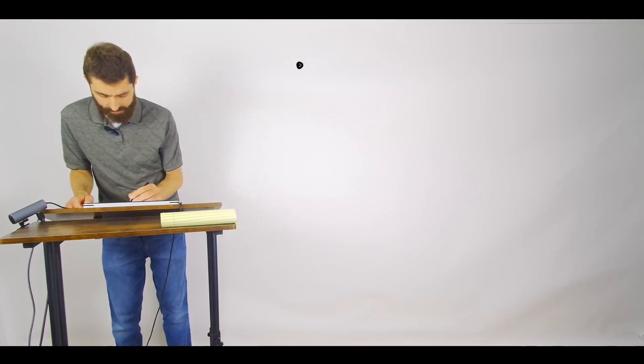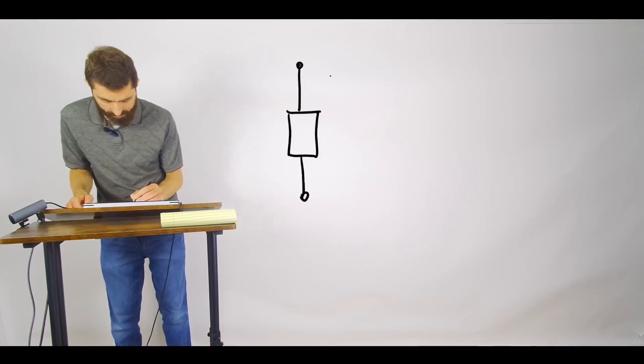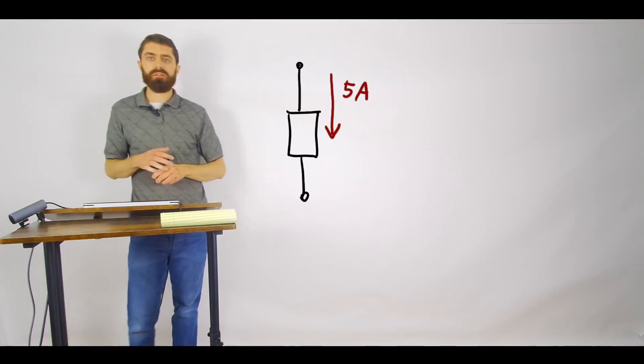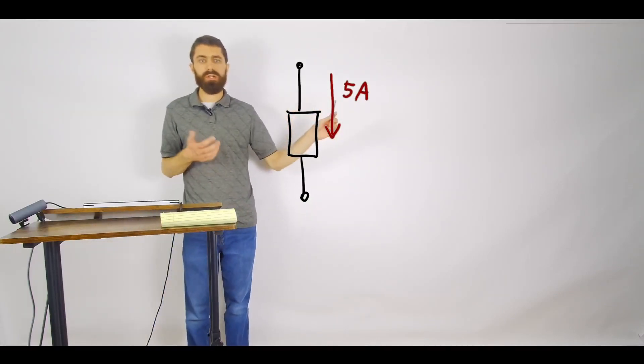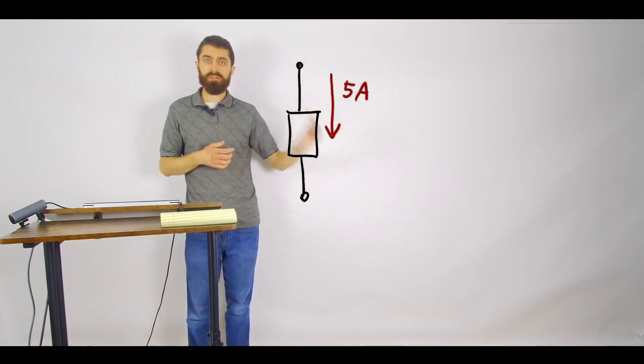So let's say you have a component, any component, and you are putting an electrical current here of let's say 5 amps through this component. So I mean that's pretty clear, right? We're just saying we've got 5 coulombs per second or 5 amps flowing through this component in this direction. We have a magnitude, we have a direction.